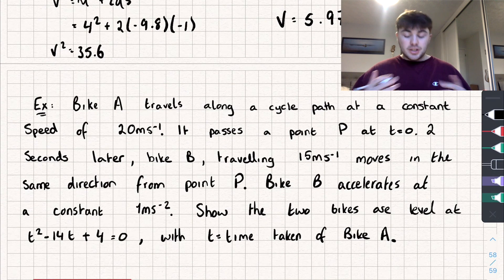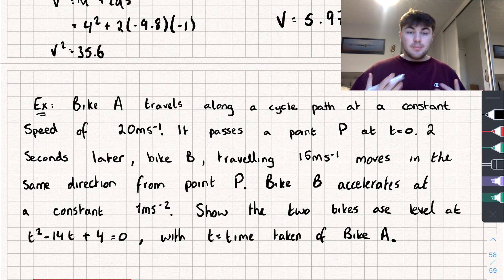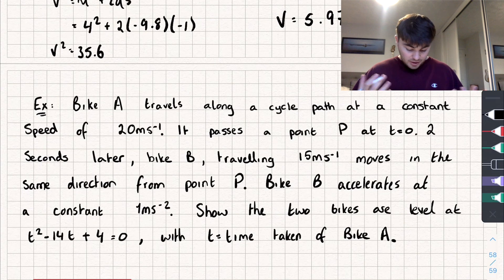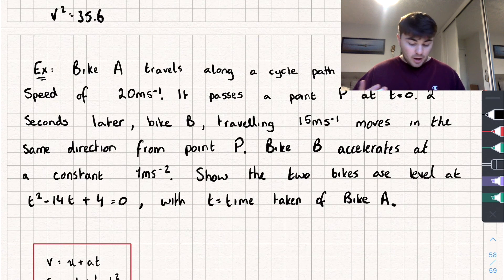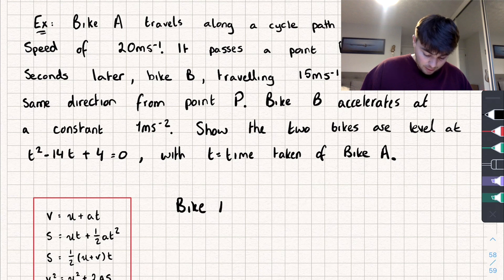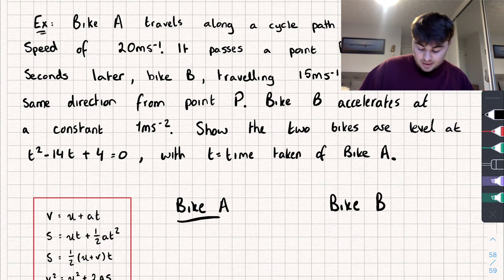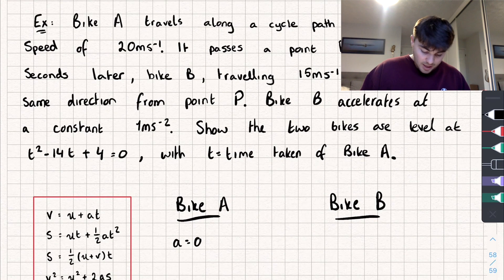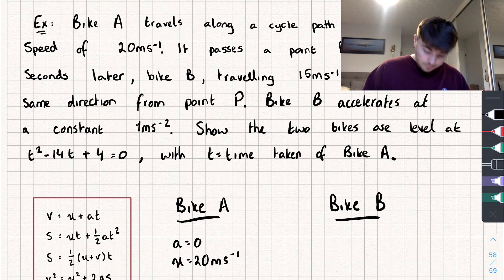The final example is probably the trickiest, but still not too bad. Bike A travels at a constant speed of 20 m/s and passes point P at t = 0. Two seconds later, Bike B — traveling at 15 m/s — moves in the same direction from P and accelerates at a constant 1 m/s². We need to show the two bikes are level at a time that satisfies a quadratic in t. For Bike A: constant speed means acceleration = 0, and initial velocity u = 20 m/s.